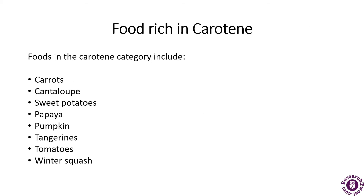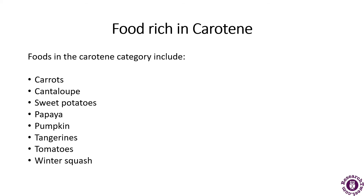Foods rich in carotene include carrot, sweet potato, papaya, pumpkin, tomato, and winter squash. Examples of carotenes include beta-carotene and lutein.